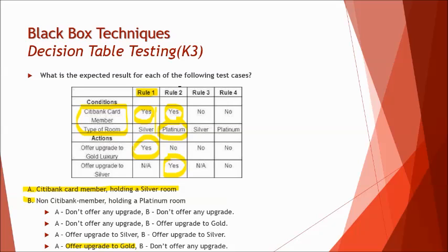It's always a good practice to check with the other part of it because you never know when the twist happens. So let's look at the test case B: non-Citibank member holding a platinum room, where non-Citibank member deals with rule three and rule four, and holding a platinum room. Then if you see there are no actions to be taken, that means obviously the poor B, it is don't offer any upgrade, and that's the right answer. I think you find it quite simple and easy to understand. All you have to do is take care of the table, based on that apply the conditions given to you and just pick the right option.